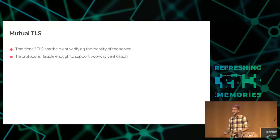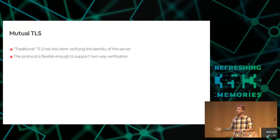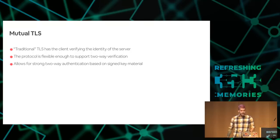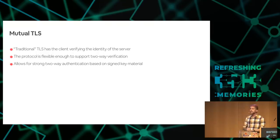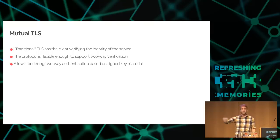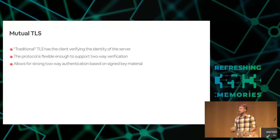Mutual TLS is pretty hard to deploy on the public web because users can't really manage certificates, but in your own production network this works really well because you can distribute certs to everyone. This gives us two-way strong authentication with key material that security engineers understand. Not only can clients of services know they're talking to a legitimate service, but that service can look at who's talking to it and make sure it's a caller that seems appropriate.